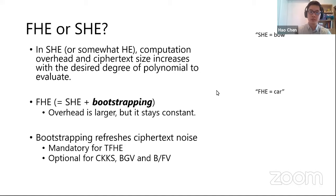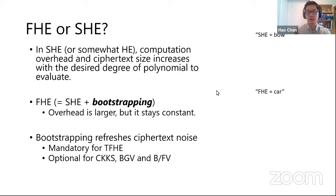What is the bootstrapping procedure? It refreshes the ciphertext noise. In the original Gentry construction and subsequent constructions, every ciphertext encodes a plaintext together with some random noise, and the noise increases when we do computations. At a certain point it mingles with the plaintext and we can't recover useful information. Bootstrapping brings the noise back to a small level so we can do more computation. For TFHE in gate bootstrapping mode, bootstrapping is mandatory after every gate. For other schemes it's more flexible — you can select certain nodes in the computation graph to perform bootstrapping.